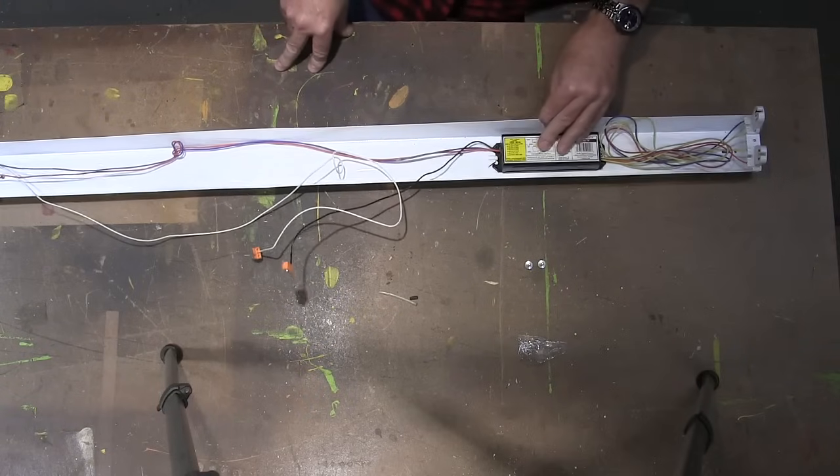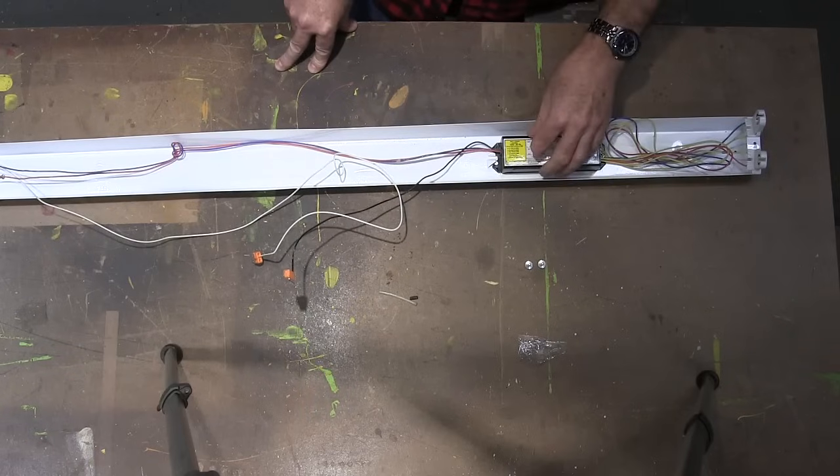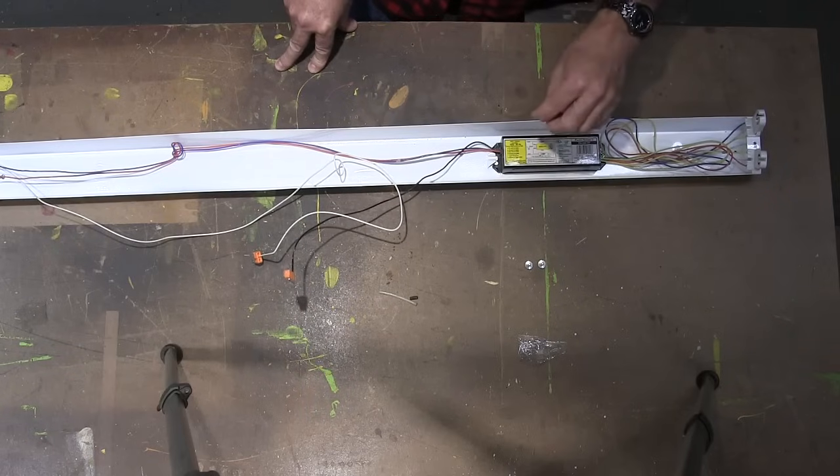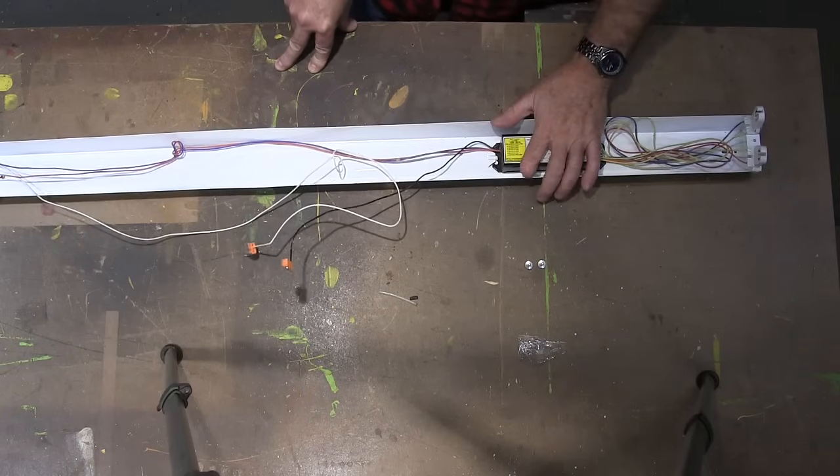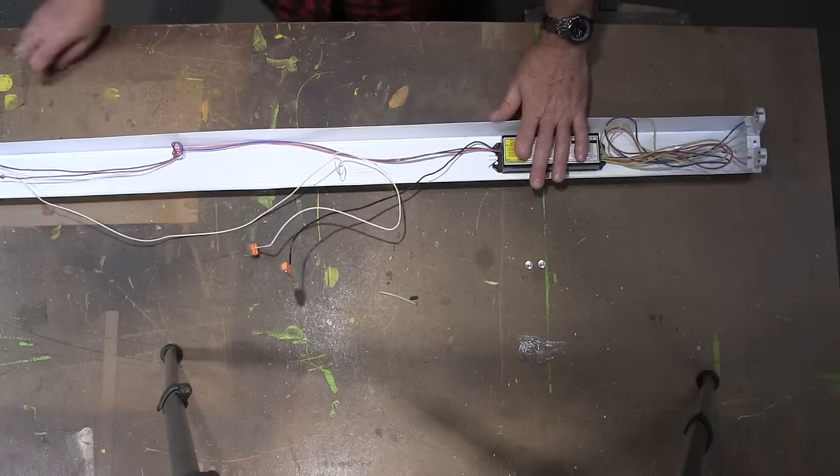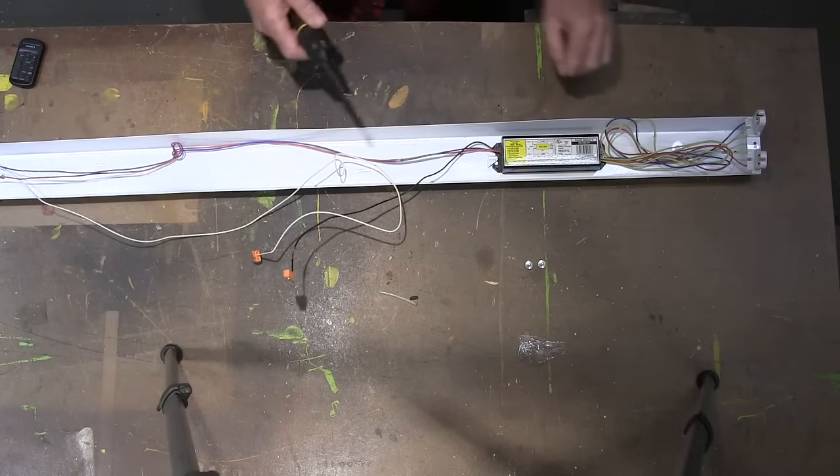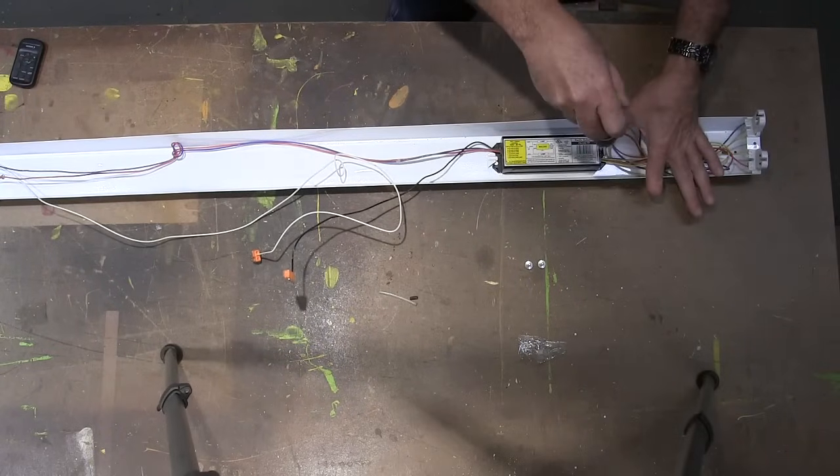All right, so this video is how to convert a fluorescent fixture into an LED fixture. This is a four-foot fluorescent-like fixture, and the first thing we're going to do is remove the ballast.